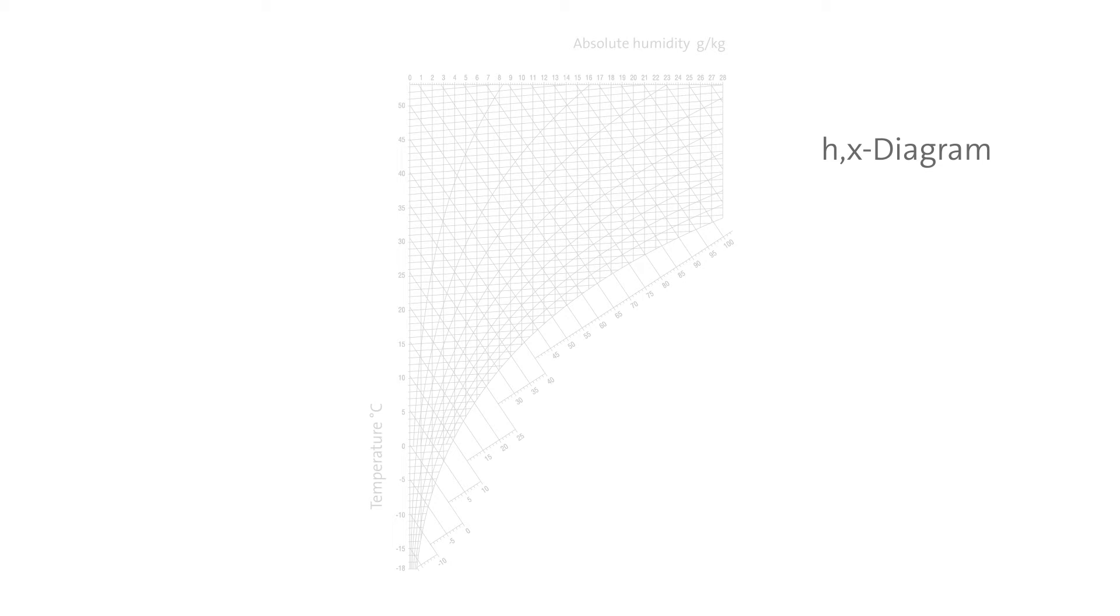The diagonal lines describe specific enthalpy. The temperature drop in an adiabatic humidification process is illustrated by these lines.